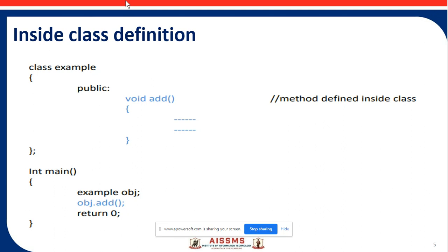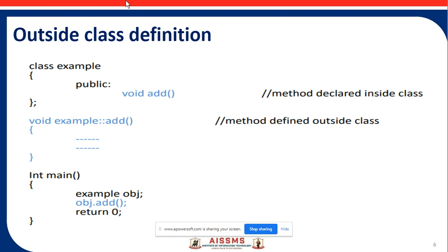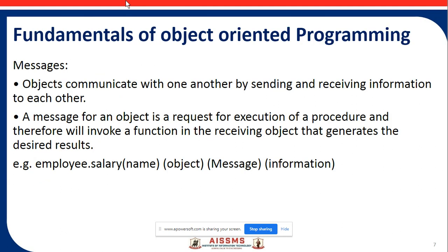For outside class definition, here is another example. The class Example is created, then the public access specifier denotes the method declared inside the class, and by using the scope resolution operator the method is defined outside of the class. In the main method, the object is created and the similar methods are called.